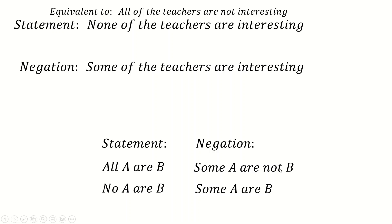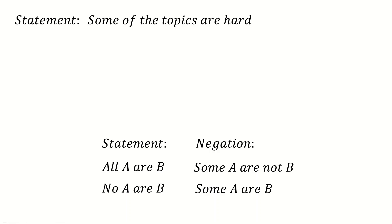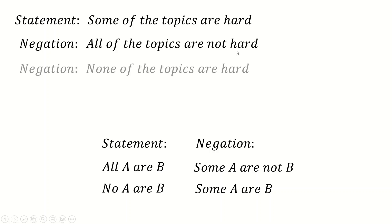The last case is when the statement itself involves some. So what about if the statement has some of the topics are hard? Now we can't negate this by simply saying some of the topics are not hard, because that's not a negation at all. That's actually equivalent to the original statement. If the original statement is some of the topics are hard, of course that's implying that some of the topics are not hard. So that can't be the negation. And so in order to negate this, we have to change this. It's either to an all or to a none. You can say all the topics are not hard, or you can say none of the topics are hard. These two statements being equivalent. Either of these are fine.